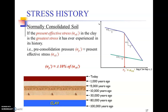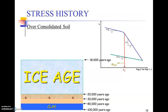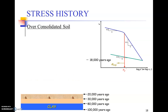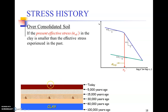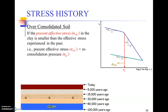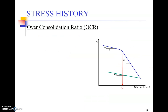An over-consolidated soil is one where, for hundreds and thousands of years, there may have been ice age deposits or a very large building placed on it. Once that load is removed and you wish to construct something smaller, you are on the left-hand side of the pre-consolidation pressure — the highest pressure ever applied to that soil layer. You are dealing with an over-consolidated soil that has already seen a much larger load than the present load. The present effective overburden pressure is less than the pre-consolidation pressure.